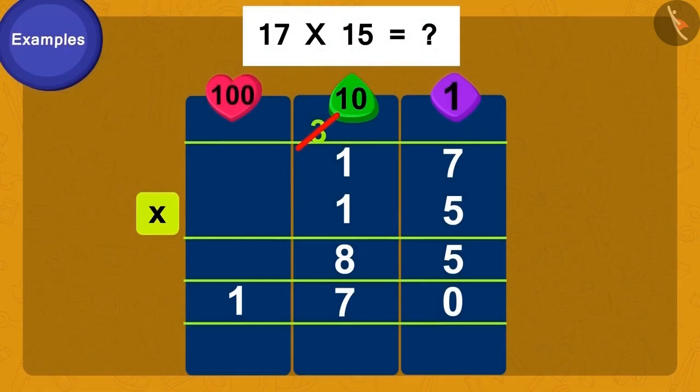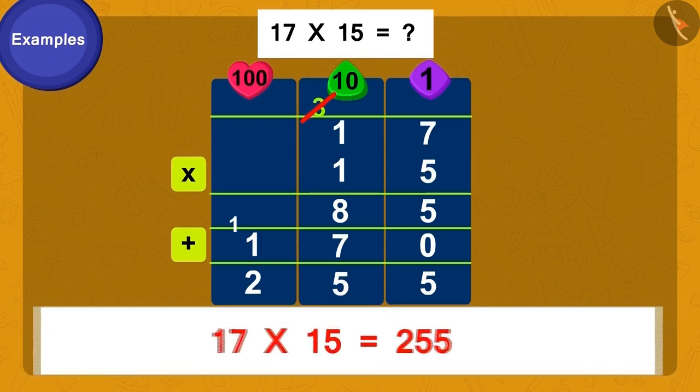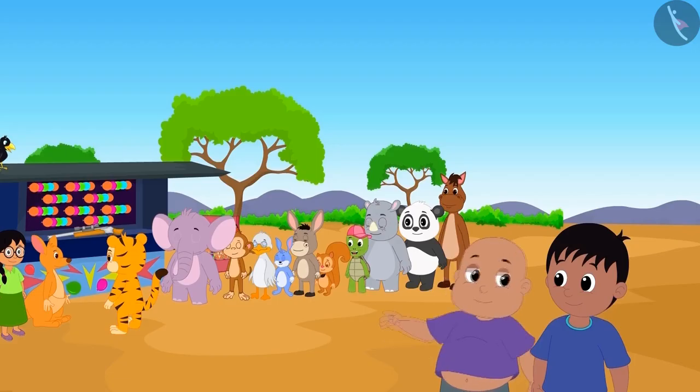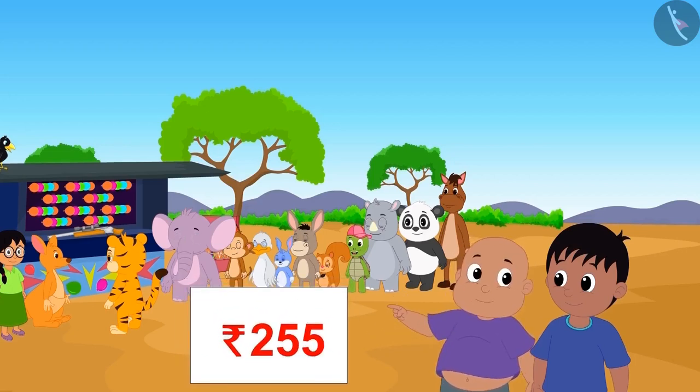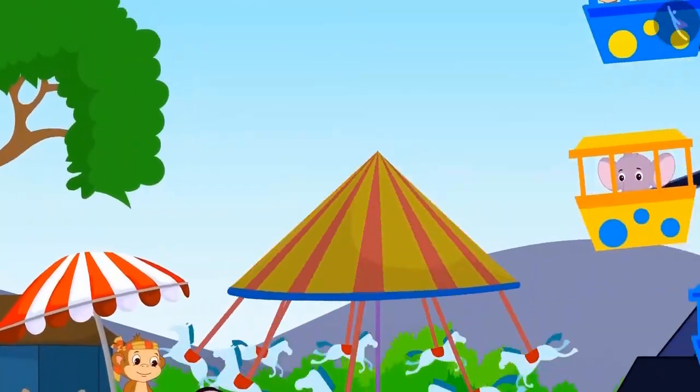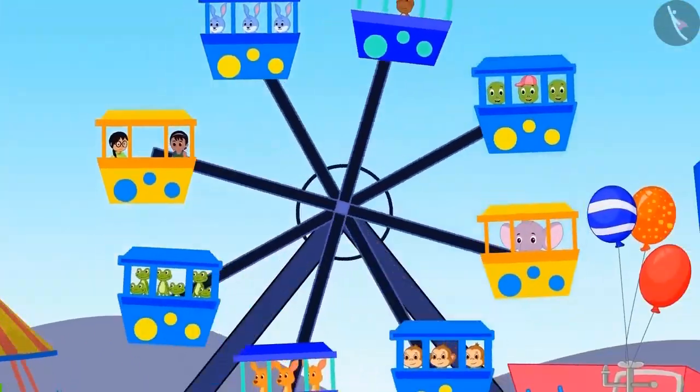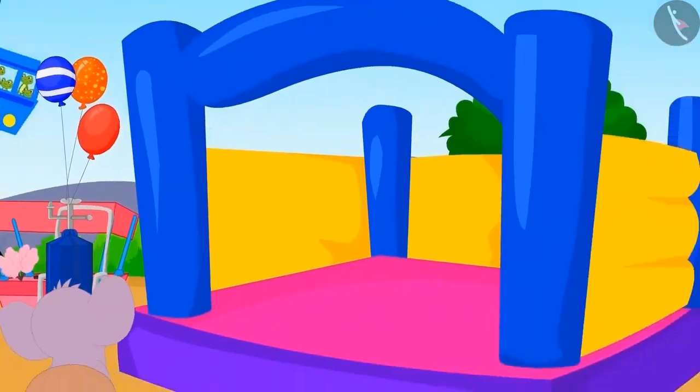Now, it's very easy. Simply add one hundred seventy to eighty-five. What do we get? Two hundred fifty-five. Doing this, we get our answer. Seventeen fifteens are two hundred fifty-five. Raju and Bablu will have to pay a total of two hundred fifty-five rupees. Raju and Bablu and their friends had a lot of fun at the fair.